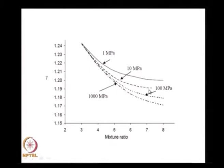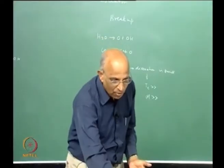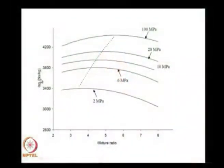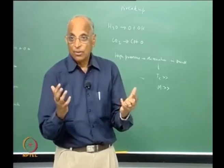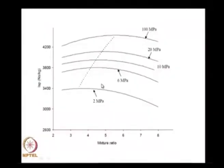With mixture ratio, we have already seen that if it is more oxidizer-rich, heavier products are formed and gamma decreases. As pressure increases, gamma decreases because we have more complicated molecules with less dissociation. Putting all things together, as pressure increases, the optimum mixture ratio for maximum C* keeps changing. Therefore, it is not only the mixture ratio alone that decides performance; pressure is also important because pressure influences dissociation. This is for the hydrogen-oxygen propellant combination.